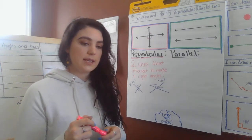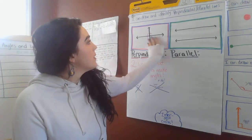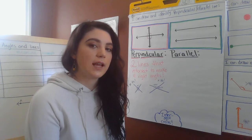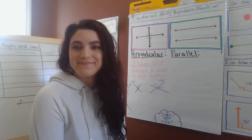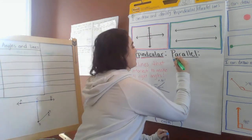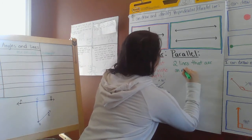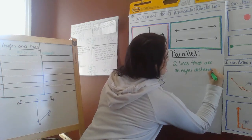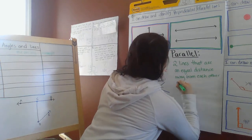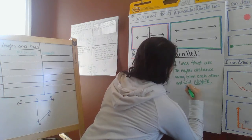Now let's talk about the yellow. Same thing — I want you to think to yourself for a minute. Look at these lines. What do you notice? How would you describe them? What would be the difference? If these ones are perpendicular and these ones are parallel, how could you describe a parallel line? If you said something along the lines of two lines that never cross, you're right. Parallel lines are two lines that are an equal distance away from each other and will never intersect.